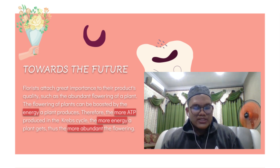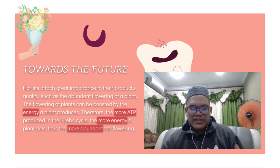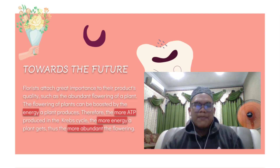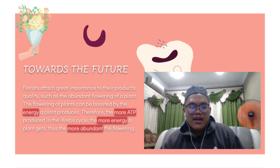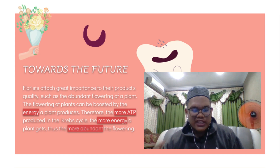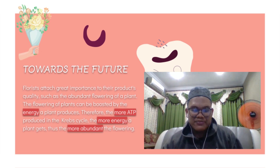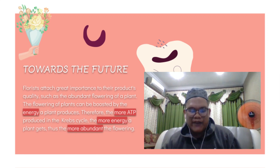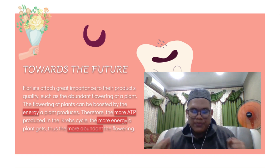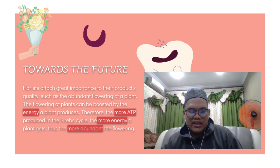Towards the future, agriculture will always be relevant. How can we use knowledge about the Krebs cycle? Most florists attach great importance to product quality such as abundant flowering. Flowering can be boosted by the energy a plant produces — the more ATP produced in the Krebs cycle, the more energy a plant gets, and thus the more abundant the flowering. However, something must be considered: producing more ATP in the Krebs cycle results in more carbon dioxide. A high concentration of CO2 can displace oxygen in air, giving humans and animals less oxygen to breathe. Carbon dioxide also contributes to air pollution through the greenhouse effect — it traps radiation at ground level, creating ground-level ozone, which prevents the earth from cooling at night and results in the warming of ocean waters.